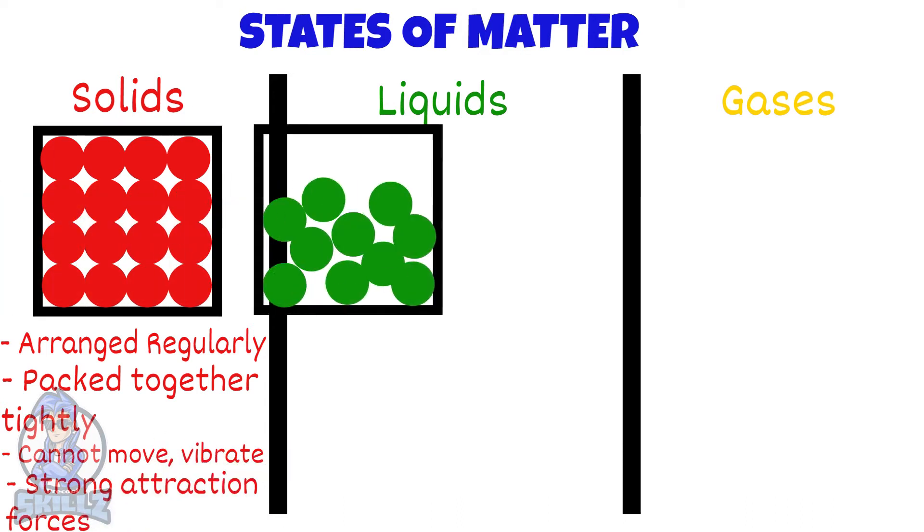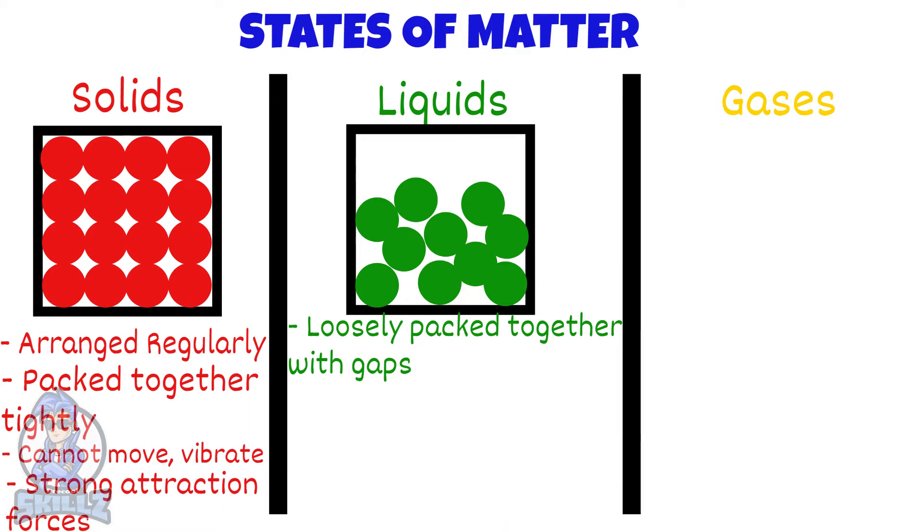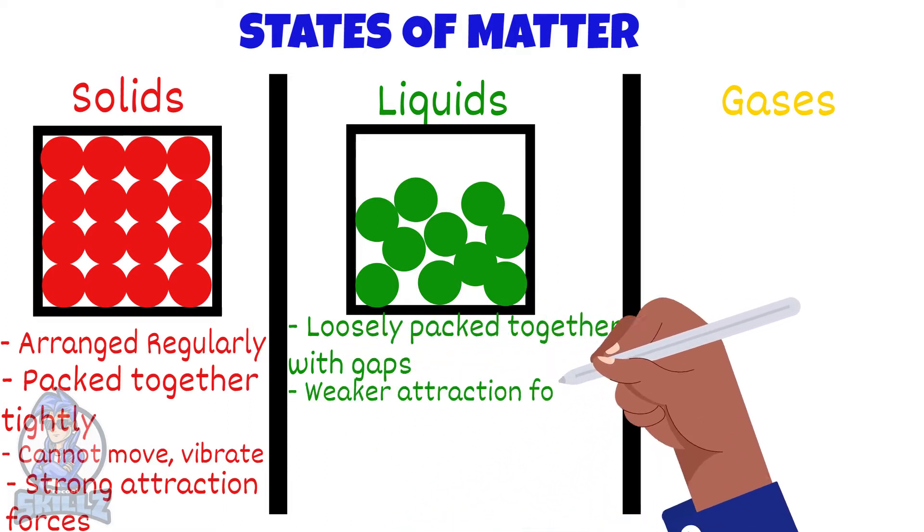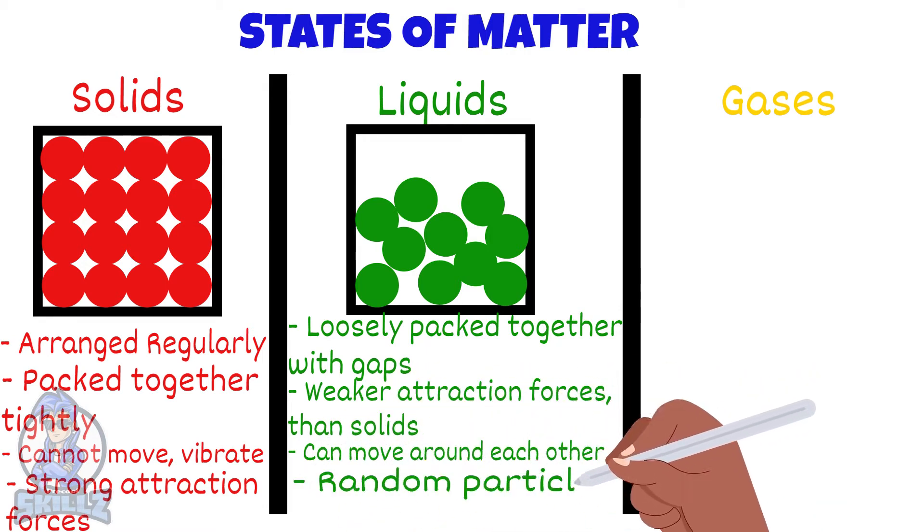Liquid particles are loosely packed. They are still touching but there are gaps between them. The forces between the particles are not as strong as that of the solids, so particles can move around each other. This leads to the particle arrangement being random.